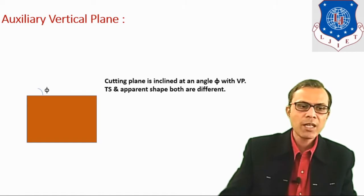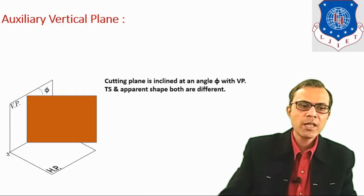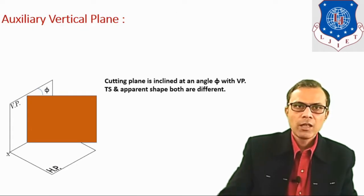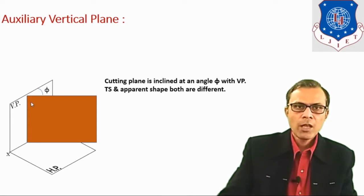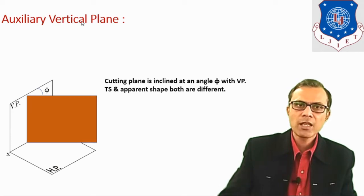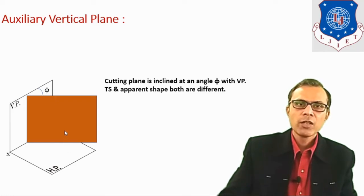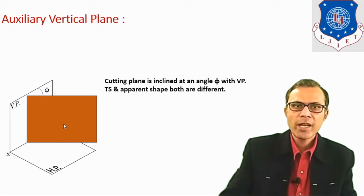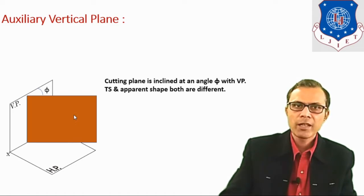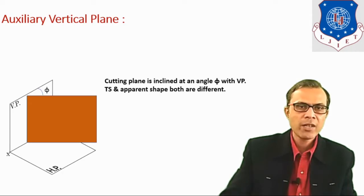The next type of cutting plane is the auxiliary vertical plane, or AVP. The position of the auxiliary vertical plane is inclined at an angle phi with BP and it is perpendicular to HP. If any object is cut by this type of cutting plane, then the true shape of the section and the apparent shape of the section both will be different.